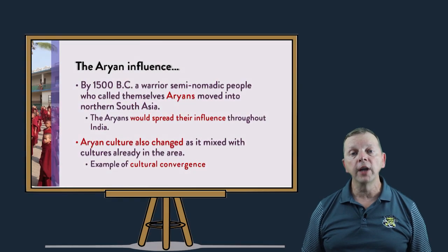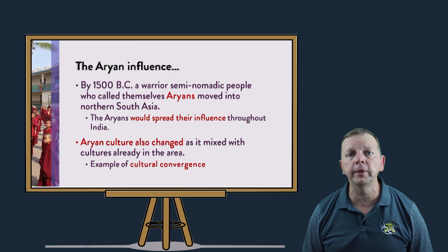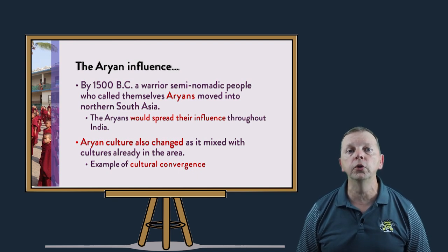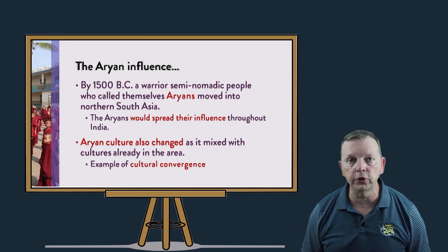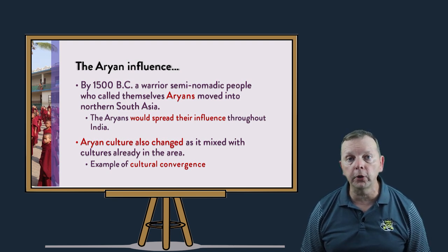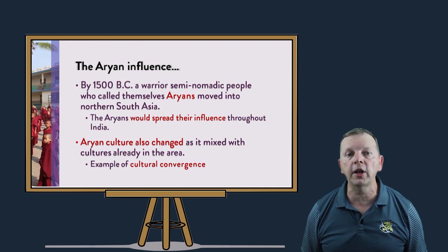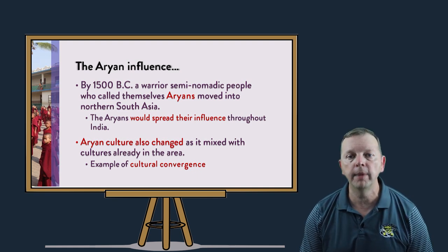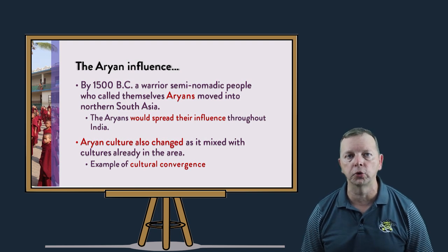Unfortunately, the Harappan civilization came to an end around 1,300 BC. The prevailing theory is that climate change actually caused an eastward shift in the monsoon patterns, and that reduced the amount of rainfall and thus reduced the amount of food that could be raised. Other scholars suggest that the Harappan civilization was assimilated by semi-nomadic warriors who moved into the northern portion of South Asia around 1,500 BC. These were the Aryans, who crossed the Hindu Kush and would spread their influence throughout India. The Aryan culture itself also changed as it met with those who were already in India — a great example of cultural divergence.